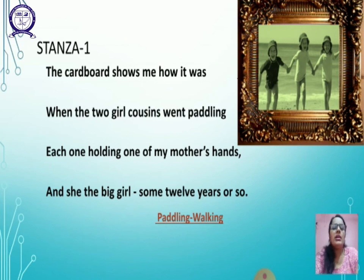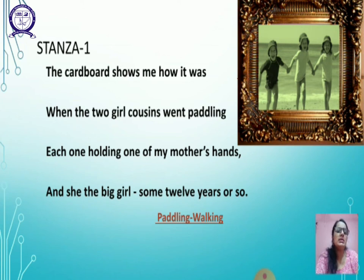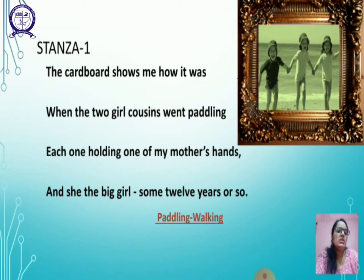Now let's begin with the explanation of the first stanza. 'The cardboard shows me how it was when the two girl cousins went paddling, each one holding one of my mother's hands, and she the big girl — some 12 years or so.' Paddling here means walking in shallow water. If you look at the picture shown in the video, there are three girls walking on the surface of water, which means that they are doing the paddling.